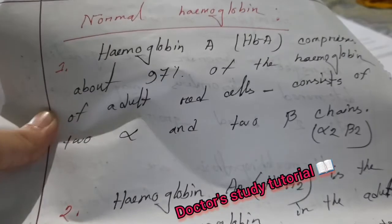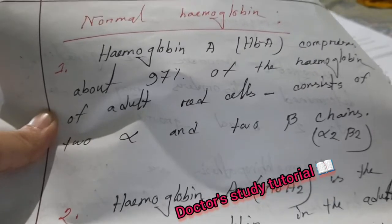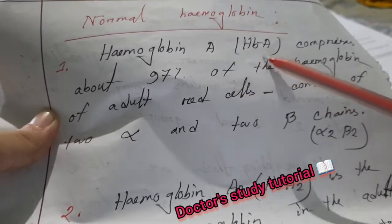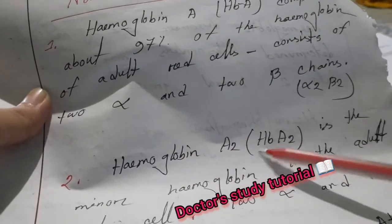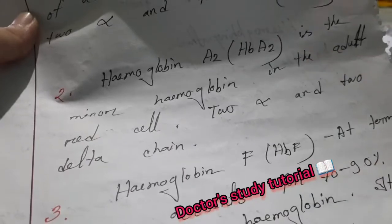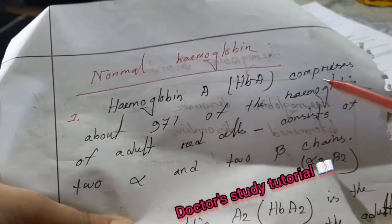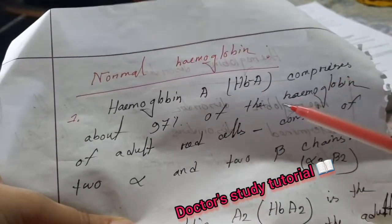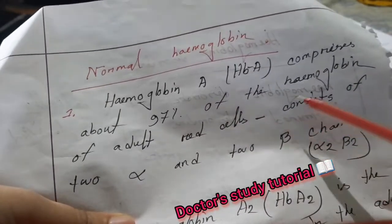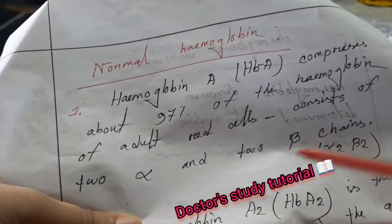Another exam question: name some normal hemoglobins. Normal hemoglobins are Hemoglobin A (HbA), Hemoglobin A2 (HbA2), and Hemoglobin F (HbF). Hemoglobin A comprises about 97% of hemoglobin in adult red cells and consists of two alpha and two beta chains.